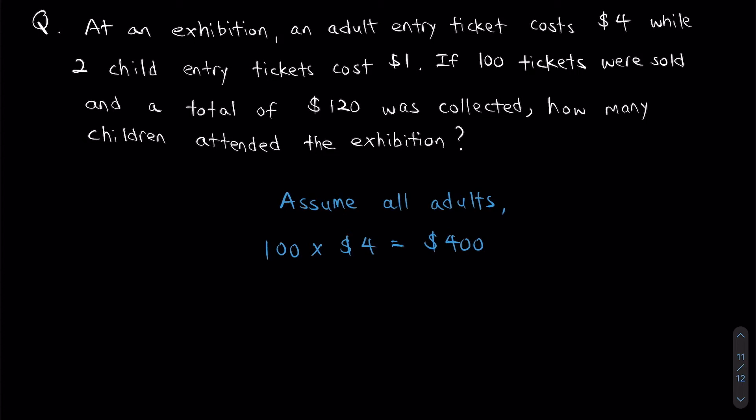But let's look at how much they actually made — it's $120, right? Which means $400 is way over how much they actually made. So, what you do next is find the difference between the amount you calculated and the actual amount. You take $400 minus $120, which gives you $280. That is the difference between the actual amount and the amount you calculated.